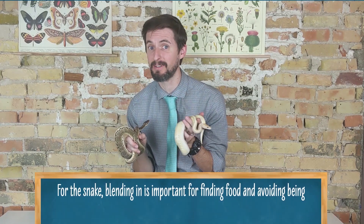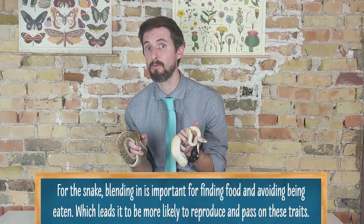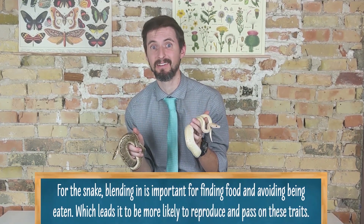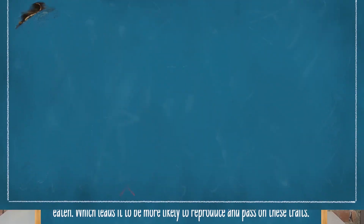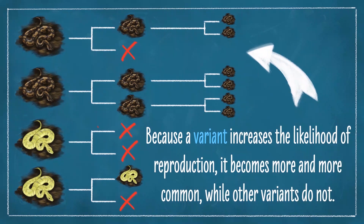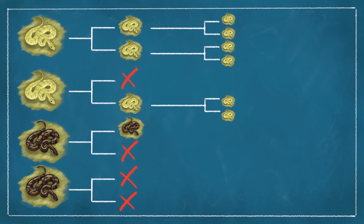Thus, in an environment where the snake happens to blend in, it will be more likely to survive and reproduce than in an environment where it doesn't blend in. And when it reproduces, it passes on its genes — its heritable variation — to the next generation. If the environment stays the same for many generations, the variants that increase the likelihood of reproducing get passed on and become more and more common in the population compared to the variants that do not increase the likelihood of reproducing. This process is called natural selection.